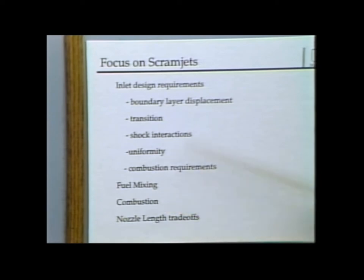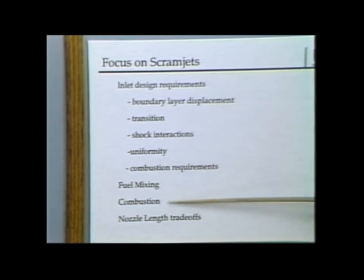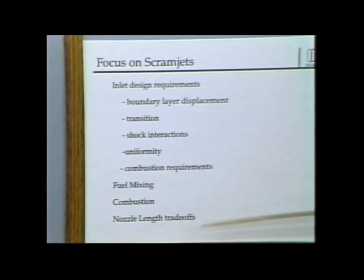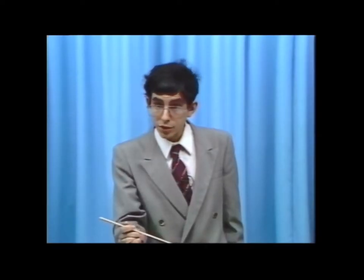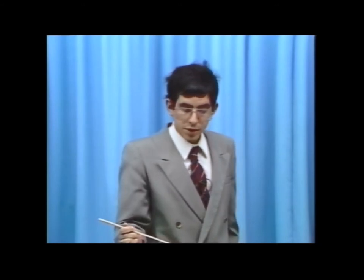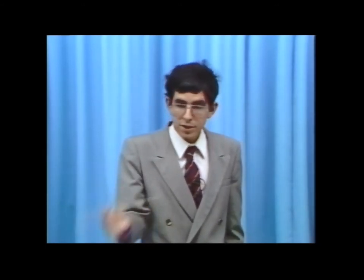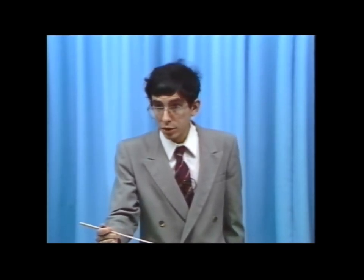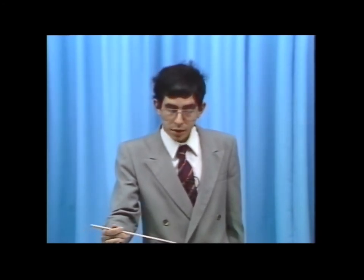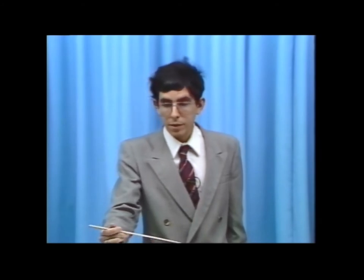Combustion is a constant game of getting fuel to burn before it blows out the back of the engine — even with the best fuel, hydrogen, we come close to that margin. Finally, there's a nozzle length trade-off: since the aft body is the nozzle, we must balance nozzle size against engine performance. If combustion continues in the nozzle, we need a long path length — meaning a long aft body, a long vehicle, and a heavy vehicle. There's always a fight between airframe people and combustion people on this issue.